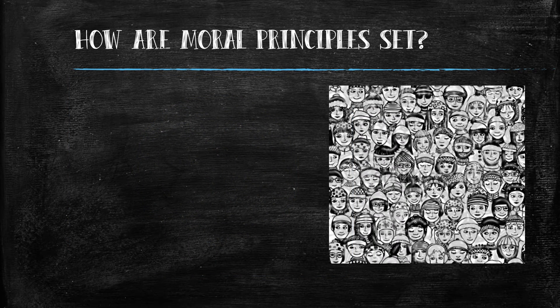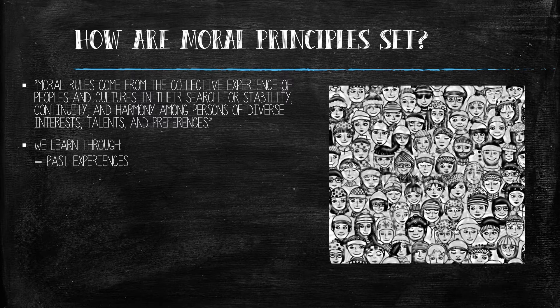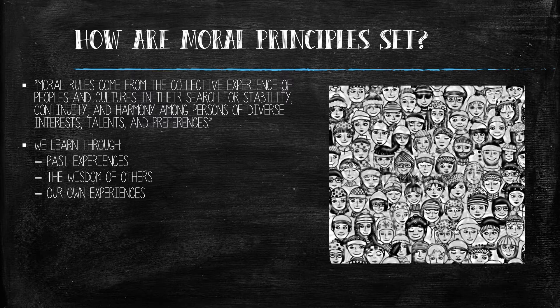So how are these principles set? I think this week's reading says it best: moral rules come from the collective experience of peoples and cultures in their search for stability, continuity, and harmony among persons of diverse interests, talents, and preferences. In other words, over the centuries, we have learned through experience what principles work best for the general population. Additionally, we learn from the wisdom of others along with our own experiences. We can probably all remember doing something that is generally considered morally wrong and feeling guilty afterward.